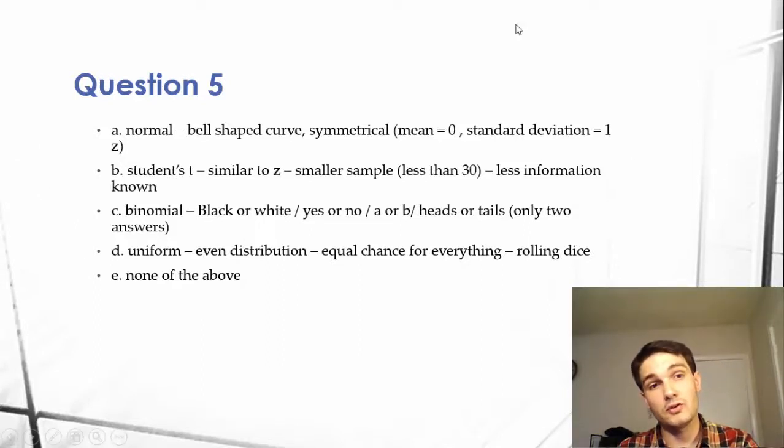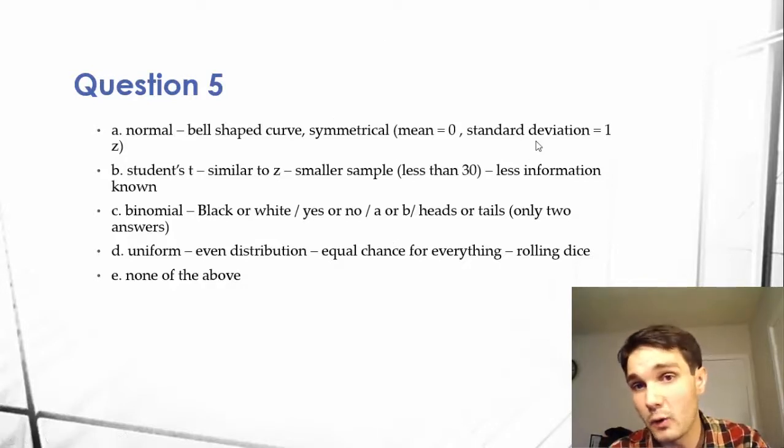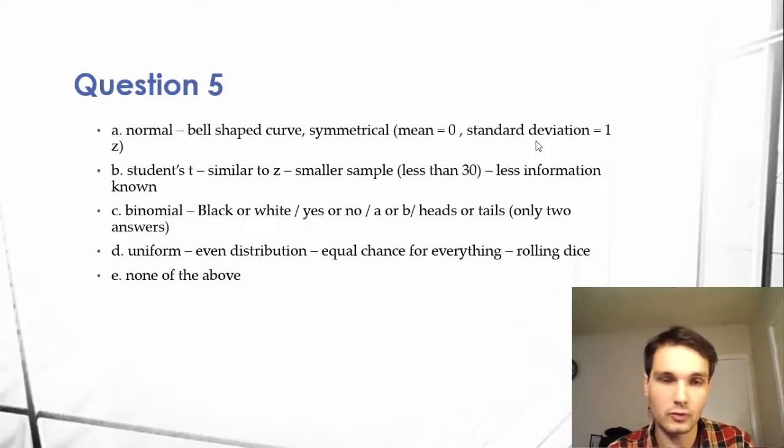Again, compared to a normal or student's t distribution, generally the mean at zero is going to be your most common variable because you have that symmetrical normal distribution. Well, in uniform, any of these can happen.